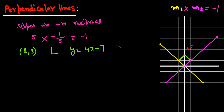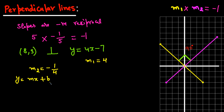The slope of the given line is m1 = 4. From the perpendicular rule, the slope of the line we are writing is m2, which is the negative reciprocal of 4, giving m2 = -1/4. Now we need to find the y-intercept. Plugging into y = mx + b: y = 3, m = -1/4, x = 8, so 3 = (-1/4)(8) + b.